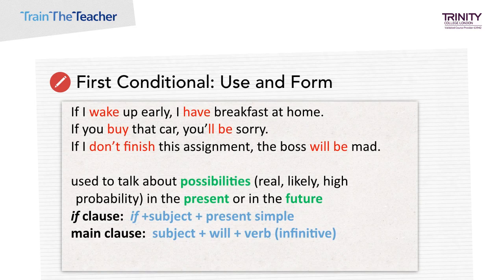The first conditional is used to refer to the present or future where the situation is real. It refers to a possible condition and its probable result. The if clause is in the present simple and the main clause is in the future simple, and it is used to talk about possibilities in the present or in the future.